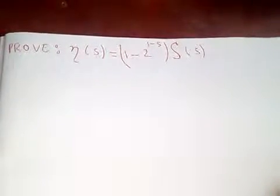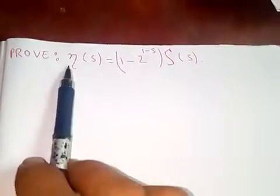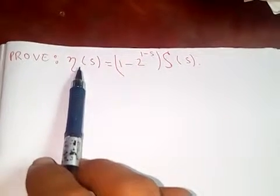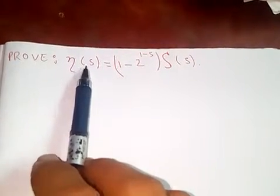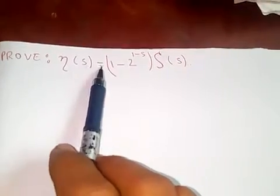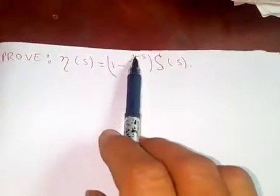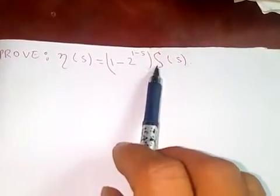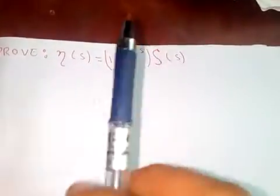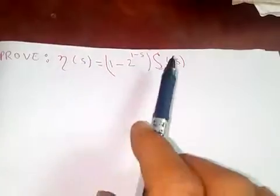Thanks for watching my video. Today I'm going to prove what we call the Dirichlet eta function: eta(s) = (1 - 2^(1-s)) · ζ(s). This is the Riemann eta function of s, and we will show the relation between the eta function and the zeta function.